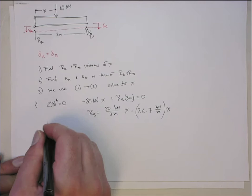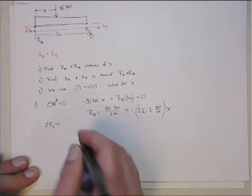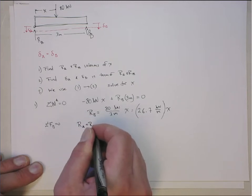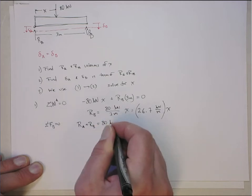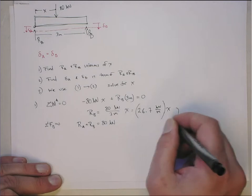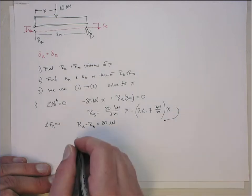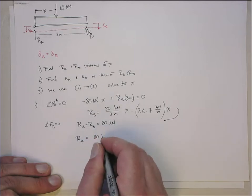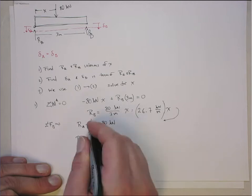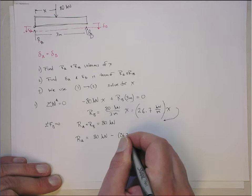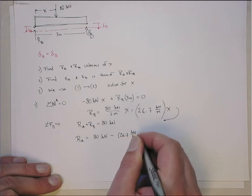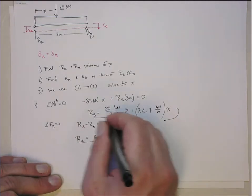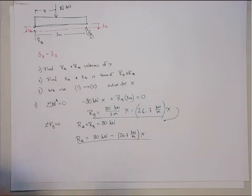So, or in other words, RB equals 80 kilonewtons over three meters times X, and then X will be in meters, and that gives me RB in kilonewtons. And so when you do that out, this becomes 26.7 kilonewton meters times X. That's RB. Now we can do sum of forces in the Y direction equal to zero, and that gives me RA plus RB equals 80 kilonewtons. And I can use this equation into here to explicitly solve for RA, and that gives me that RA is equal to 80 kilonewtons minus RB, which we know from up here is 26.7 kilonewton meters times X. So here's RA and here's RB. They're both in terms of X, so X is unknown.